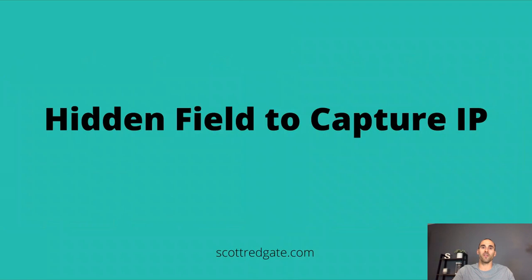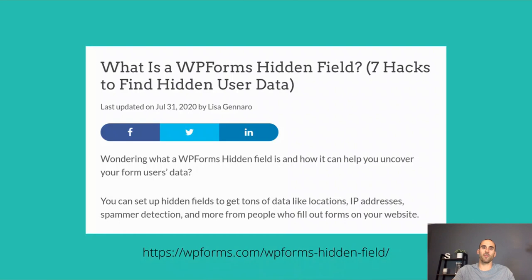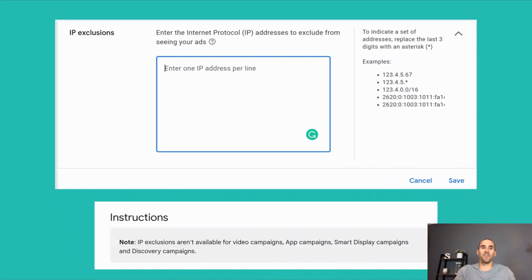With this next one, you'll want to confirm with your region's privacy laws that it's something you're OK to do, but you could set up a hidden field on your form to capture the IP address from the user submitting it. Just like the honeypot strategy, this lets you collect the IP address of the spammer. In Google Ads, you have the ability to set an IP exclusion for many campaigns, which would stop that spammer from ever seeing your ads and being able to click on them in the future — so from this point forward, you can stop that spammer from reaching your website.